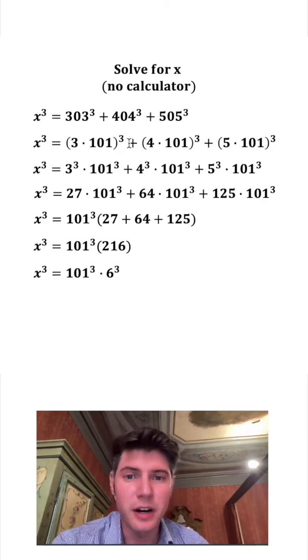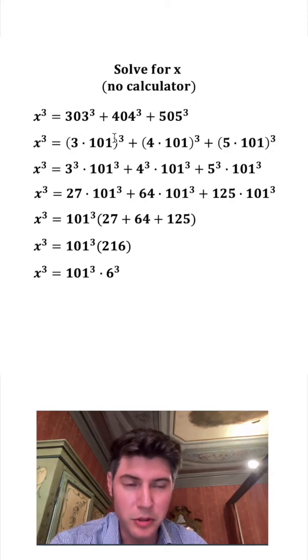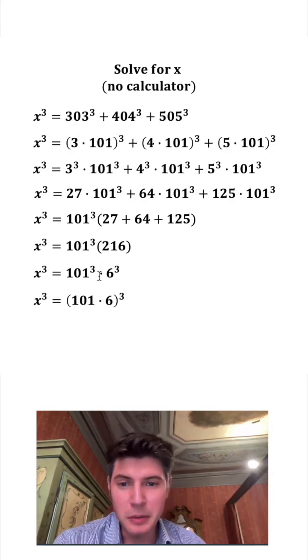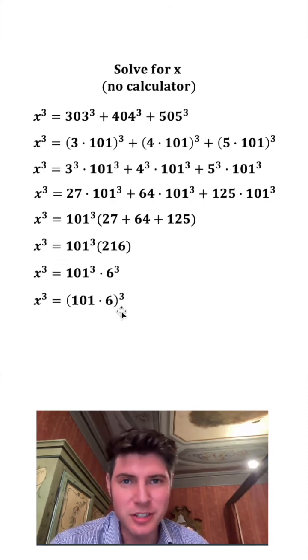And now just like up here where I distributed the cube to both of the terms being multiplied, I can do the opposite here. I'm going to pull that cubed out. It's going to look something like this.